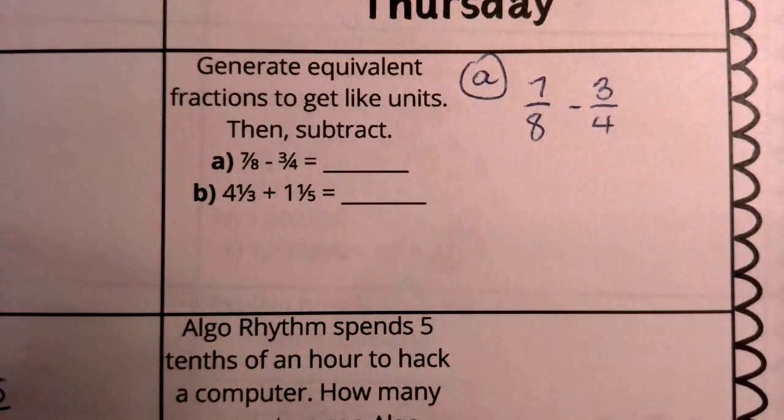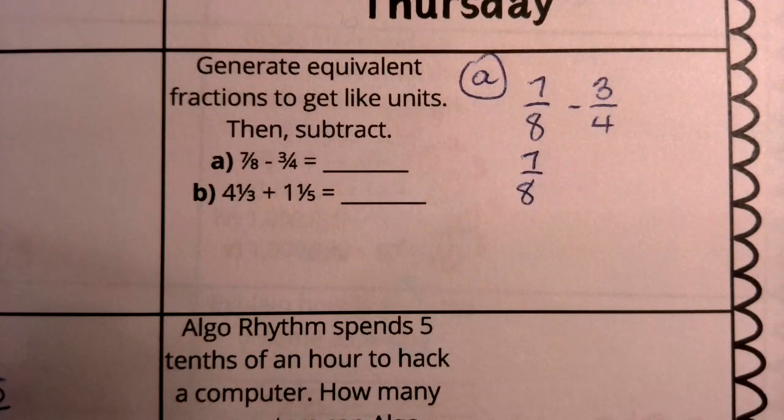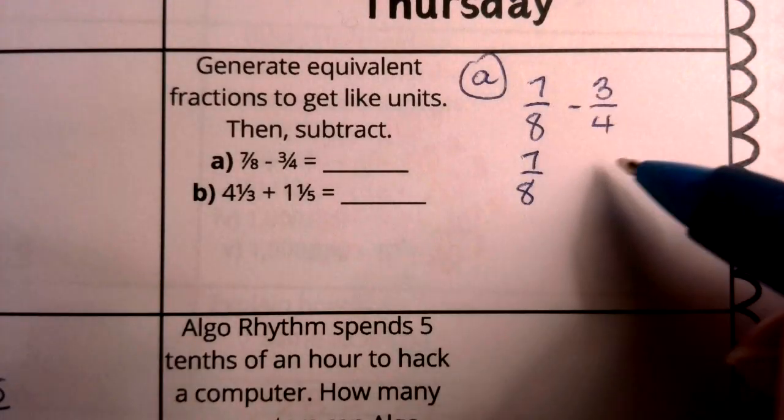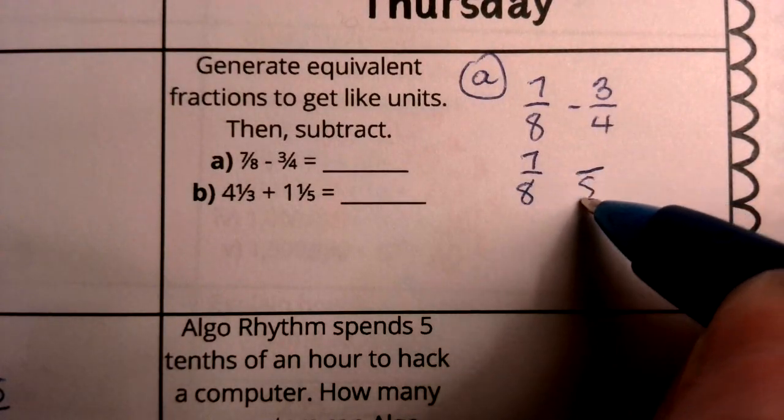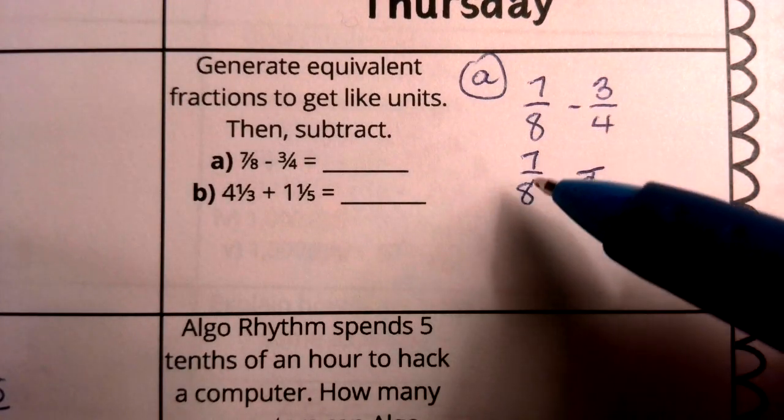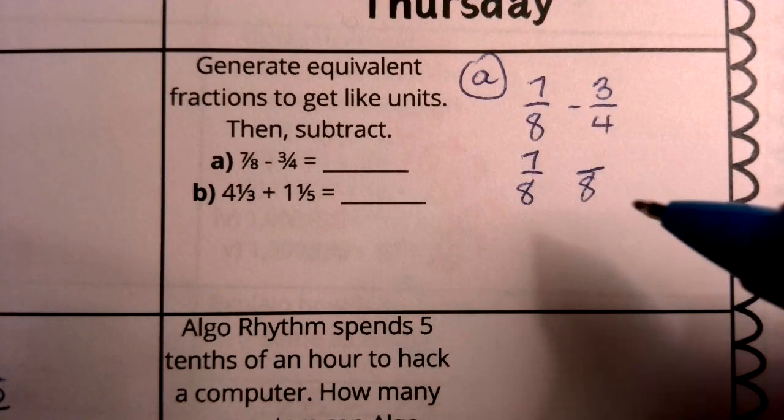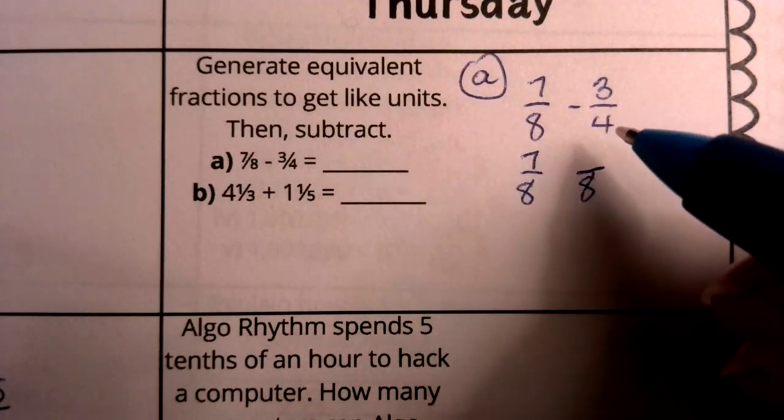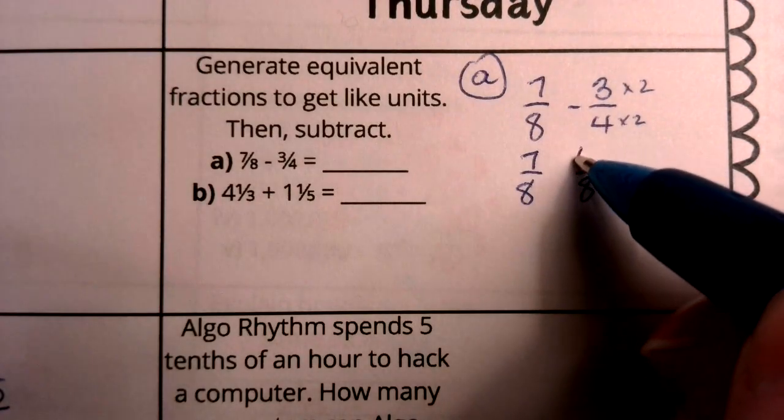But I know there's a relationship between 8 and 4. So I know a good way to get my common denominators, my like units, would be to double 3 and to double 4 so that would get us to our denominator of 8. I'm keeping 7/8 as 7/8, but I'm turning 3/4 into an equivalent fraction with a denominator of 8. What did I do for the 4 to get to 8? I multiply it by 2. Whatever I do to the denominator, we're going to do the same to the top. So 3 times 2 gives us 6.